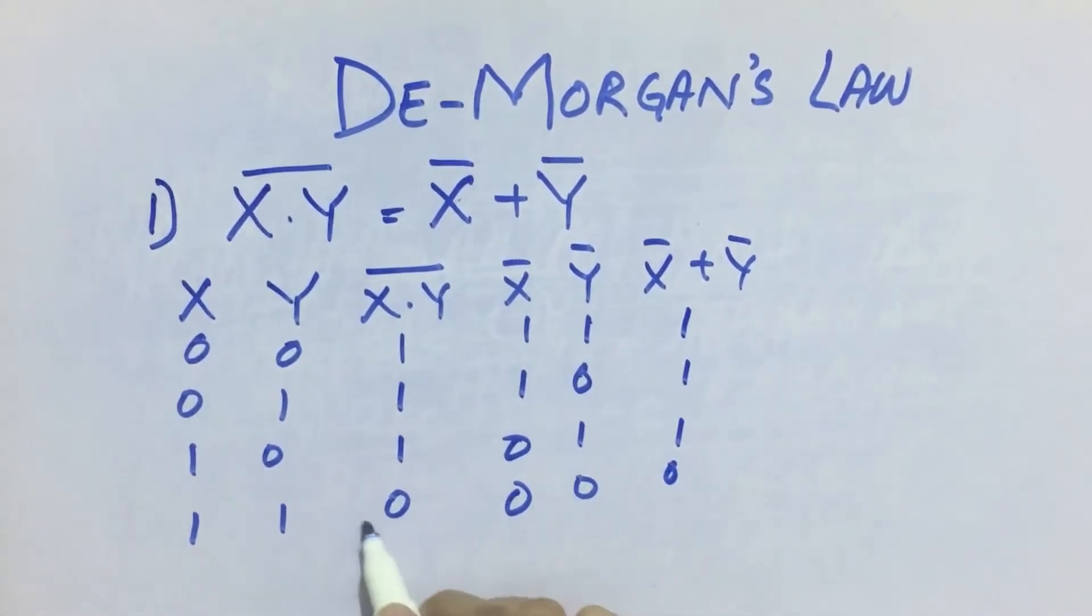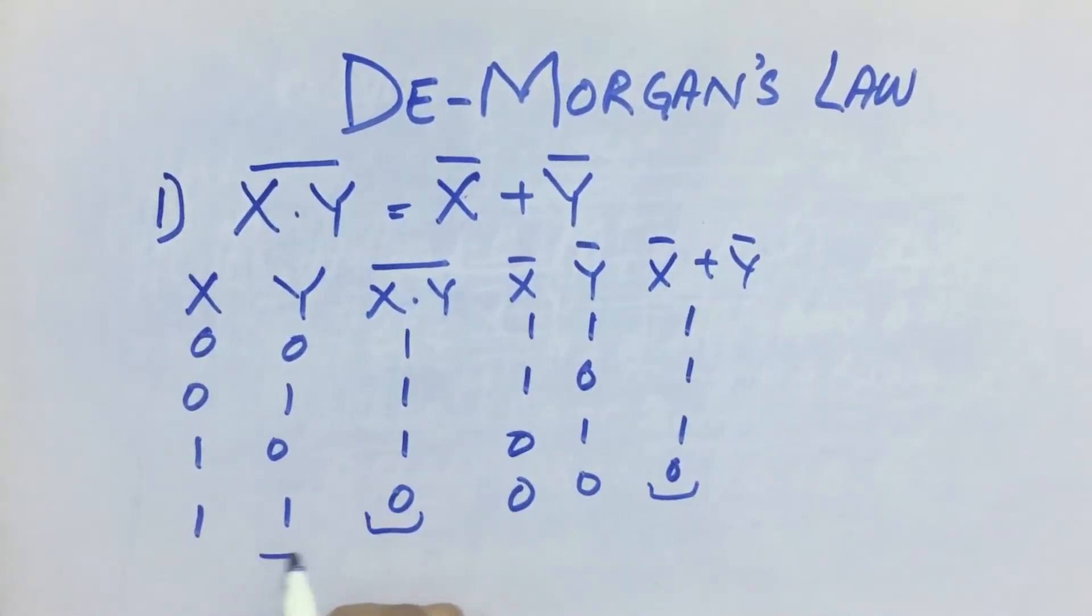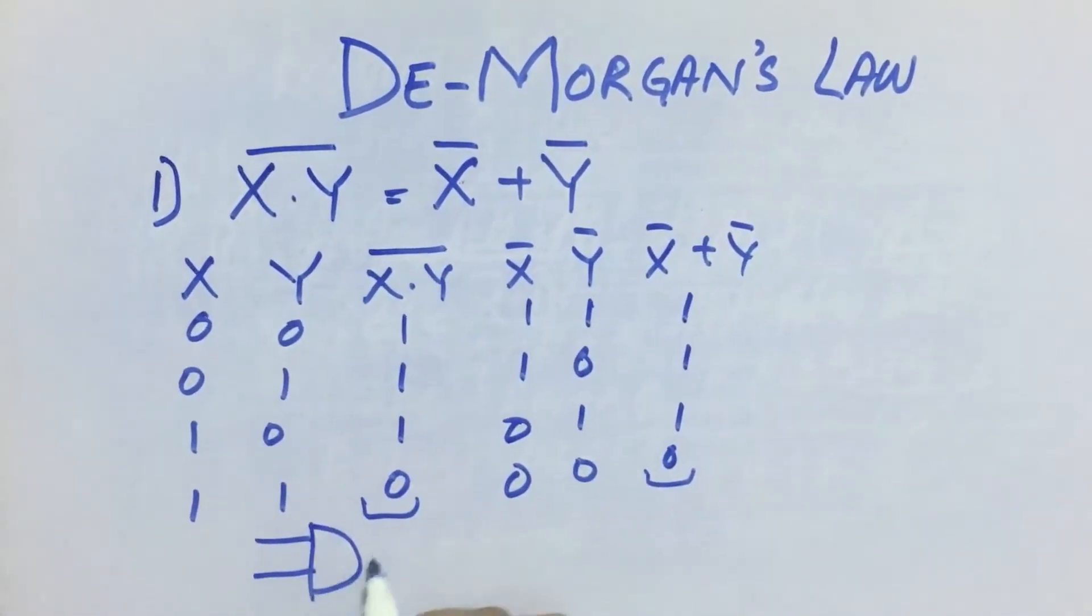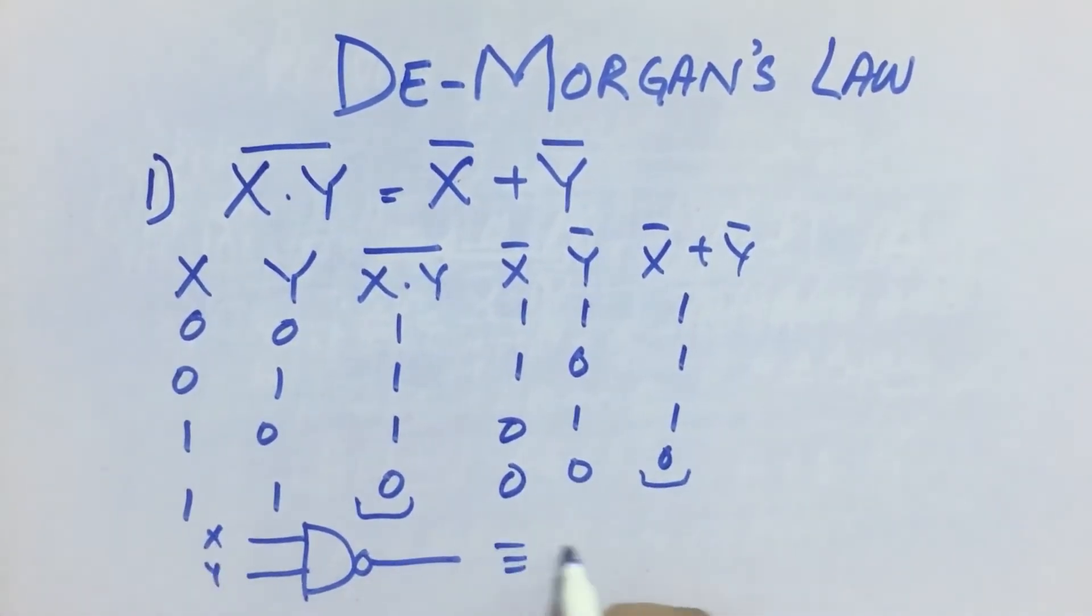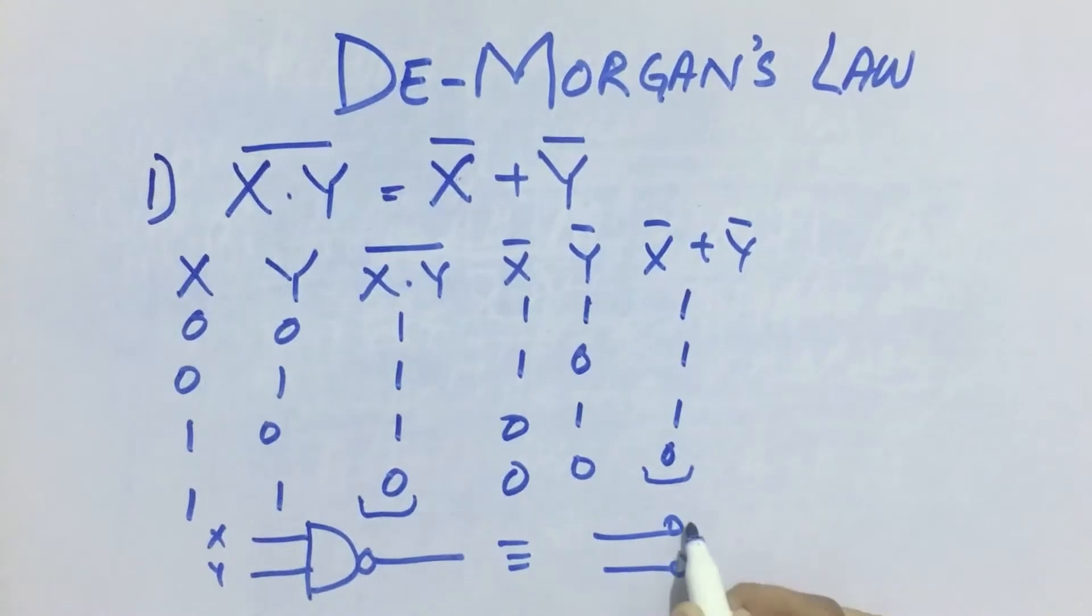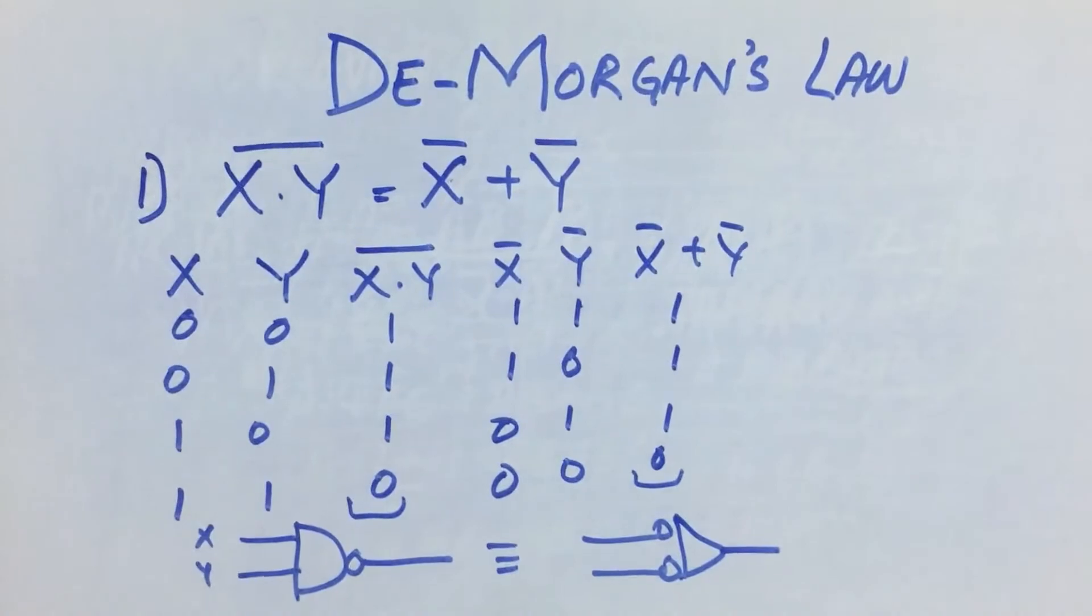So in this way, we can prove this De Morgan's law using the truth table. So in the end, we will get x into y whole bar is equivalent to x bar plus y bar.